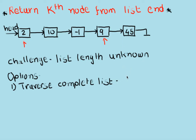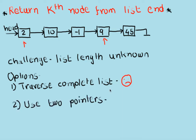But this is an inefficient approach. The other option is to use two pointers. When we use two pointers, we really don't need to find the length of the list, and without finding the length we can solve this problem. This is the efficient approach.